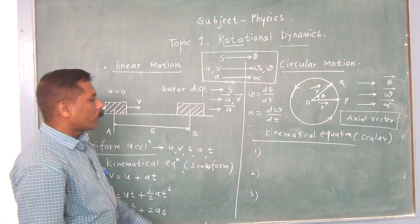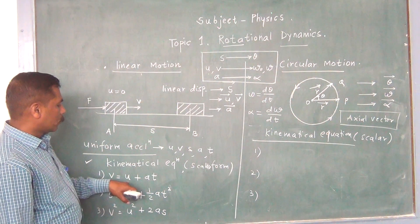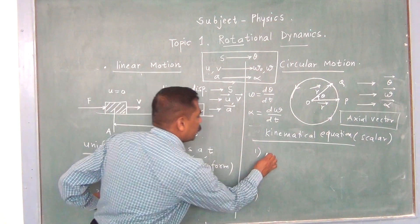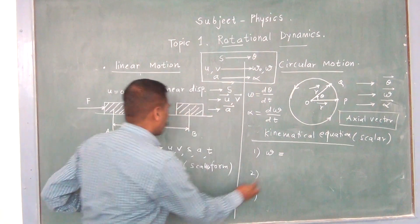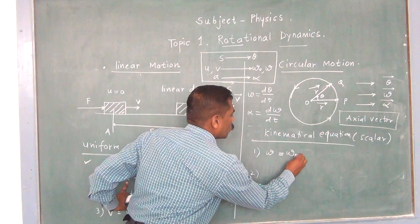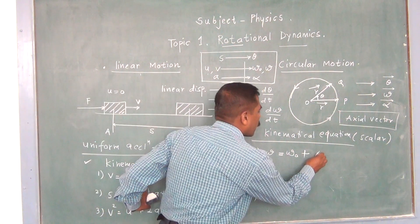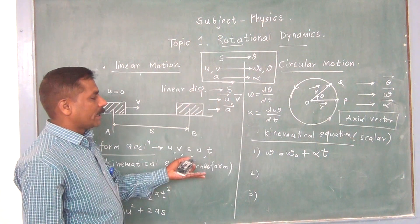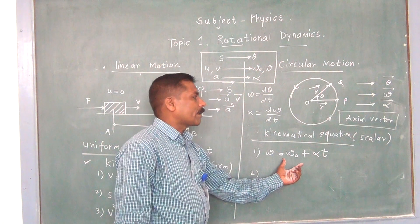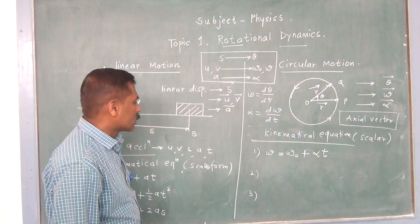How can we form this kinematical equation? The first kinematical equation is V is equal to U plus AT. V is analogous to omega, so I will write omega is equal to omega 0 plus alpha times T. This is the first kinematical equation used in the case of circular motion.